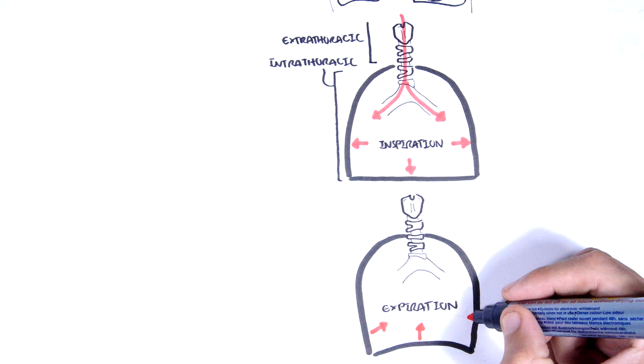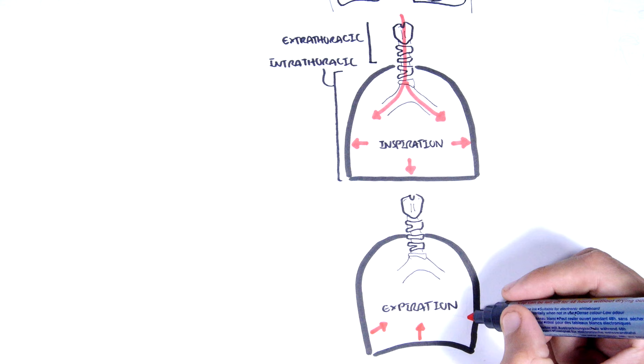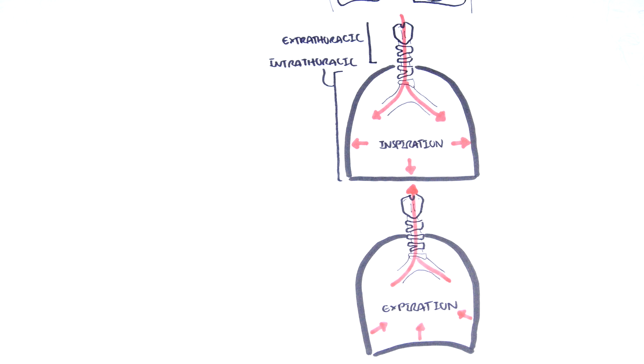During expiration, air flows from the intrathoracic to extrathoracic region. If there is any obstruction in the small airways of the intrathoracic region, it can cause an expiratory stridor. Expiratory stridor is much less common.